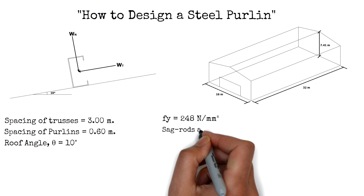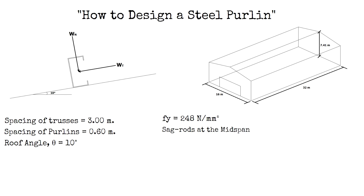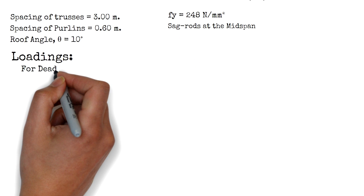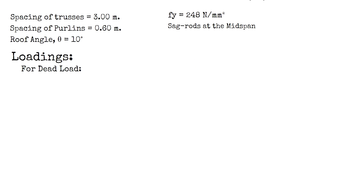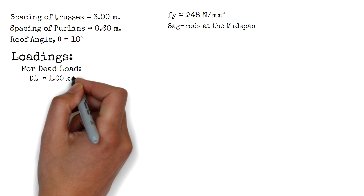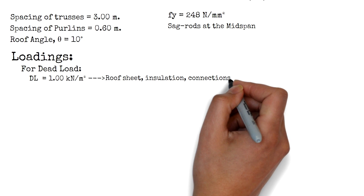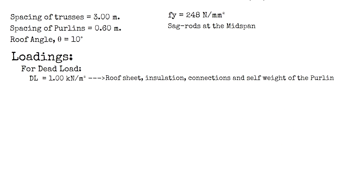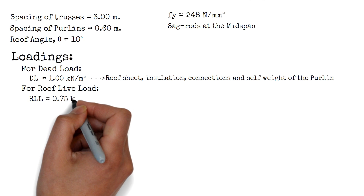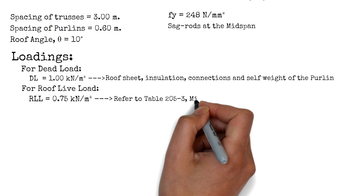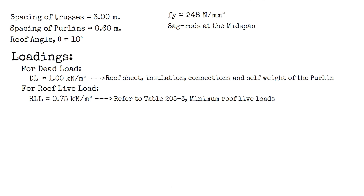Assuming that we have a sag rod installed at the mid-span, we will consider the following loadings. For the dead load, we have a total of 1 kN per square meter, considering the roof sheet, insulation, connections, and the self-weight of the purlin. For the roof live load, considering Table 205-3 of the minimum roof live loads, the roof live load would be equal to 0.75 kN per square meter.